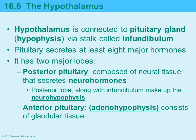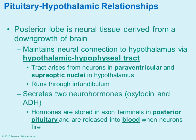The pituitary gland secretes eight different hormones and has two lobes: the posterior pituitary and the anterior pituitary. The posterior pituitary is composed of neural tissue, and the anterior pituitary is composed of glandular tissue. There are nerves connecting the hypothalamus to the pituitary that run through the infundibulum.